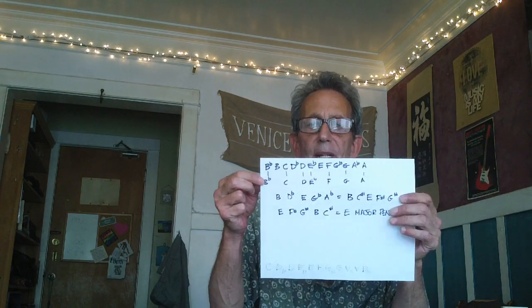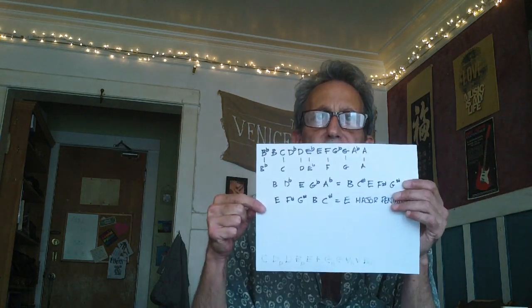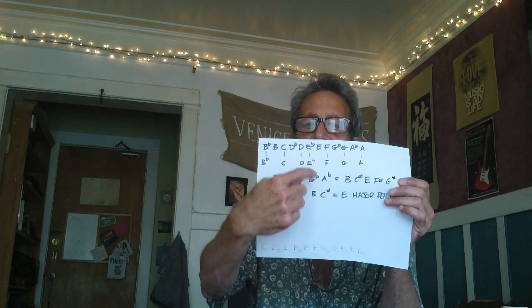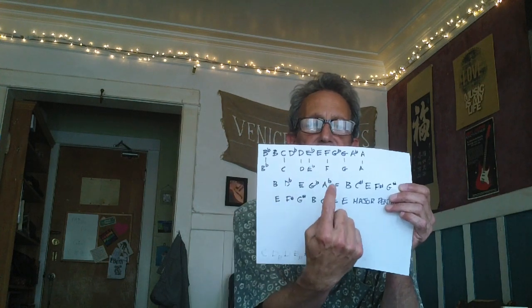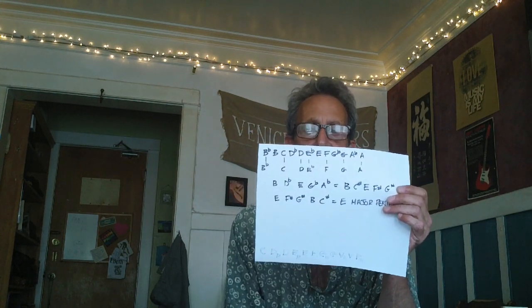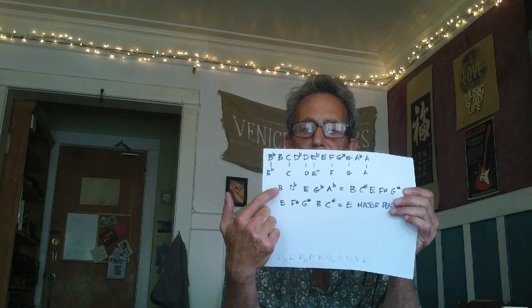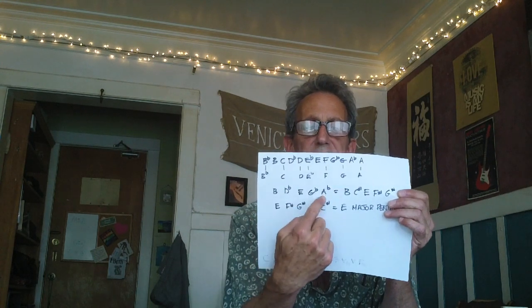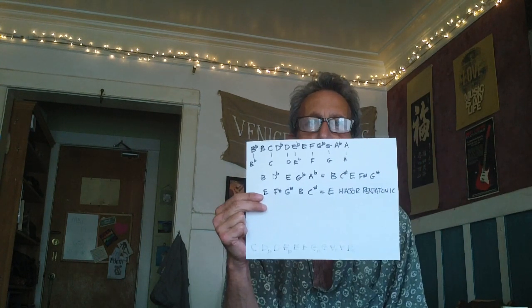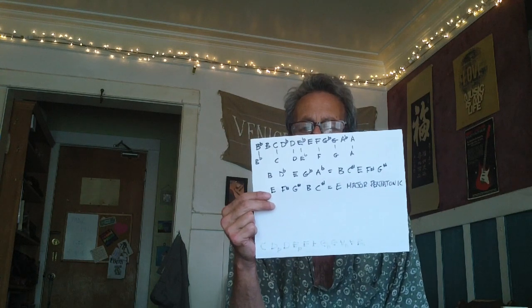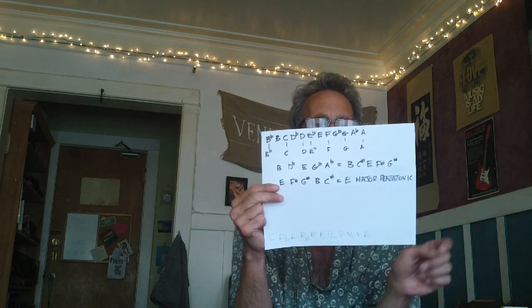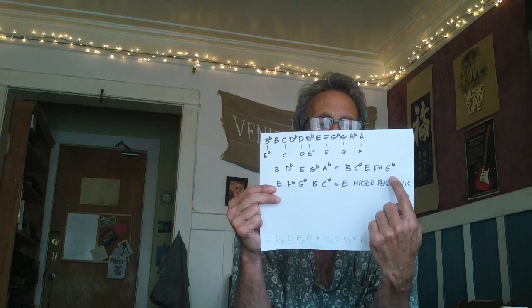I'll give you a quick example. Up top I have the chromatic scale. Extracted out of that I have the B flat major scale: B flat, C, D, E flat, F, G, A. Now what I did here was take the leftover notes — B, D flat, E, G flat, A. But since the Pentatonic we're about to extract is from the key of E major, I had to turn these flats into sharps. So now we get B, C sharp, E, F sharp, G sharp.